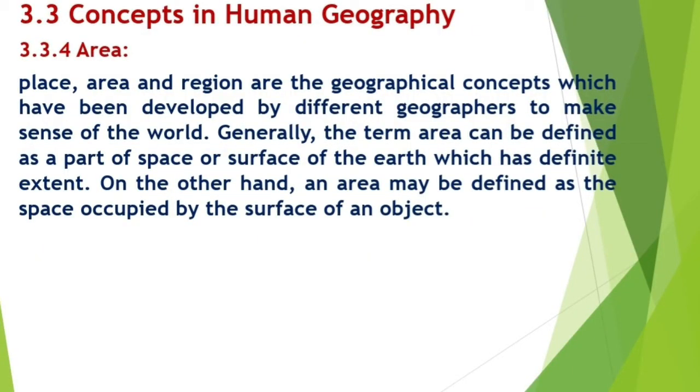The next concept is area. Place, area, and region are geographical concepts developed by different geographers to make sense of the real world. Generally, the term area can be defined as a part of space or the surface on the earth which has definite extent. An area may also be defined as a space occupied by the surface of an object. In geometry, area is measured in square units like square centimeters, square feet, and square inches. A significant characteristic of an area is its extent, and area may differ in its size — small, medium, or large.